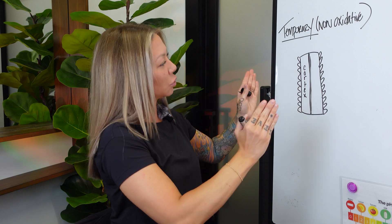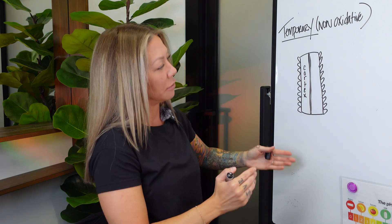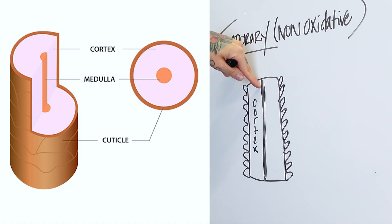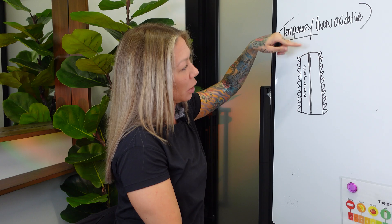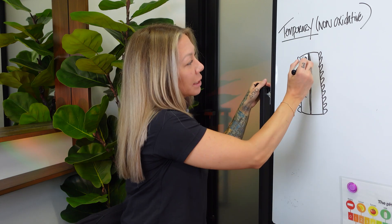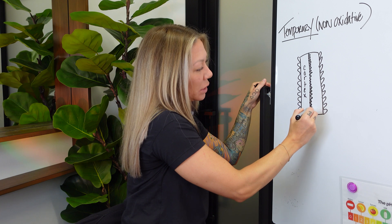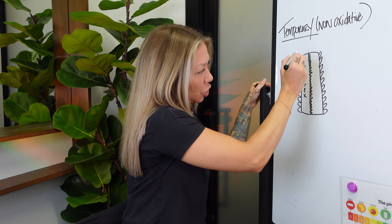Temporary hair colors make a physical change, not a chemical change. You're physically seeing the change with your eyes but it's not going inside the hair shaft and making any kind of chemical alterations. Pretend this is a single strand of hair cut in half and blown up. The very middle layer is the medulla and it doesn't do much or have much to do with hair coloring, so we don't really need to talk about that.